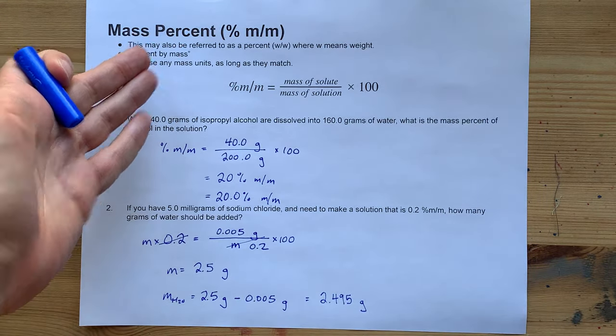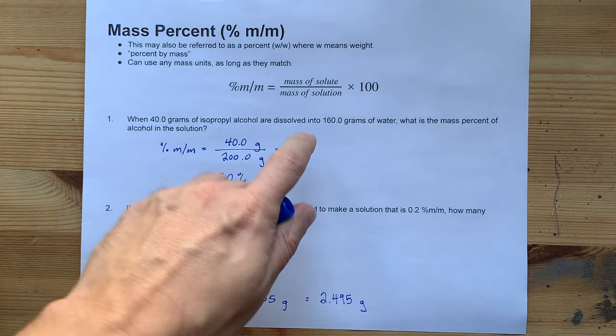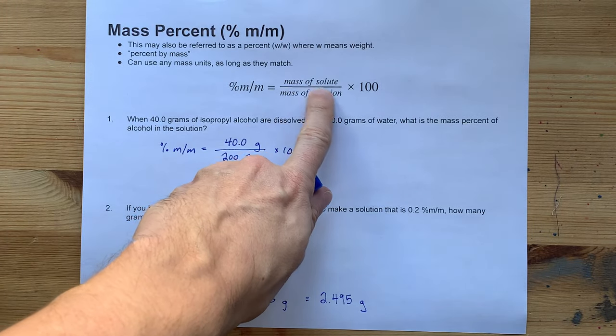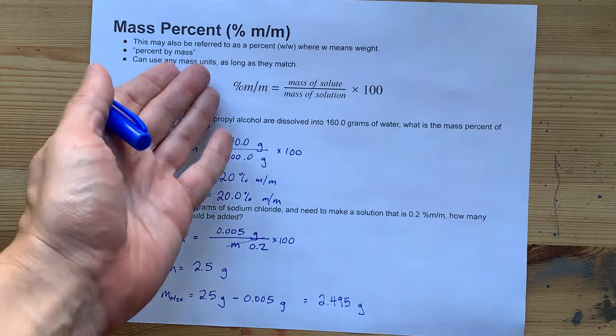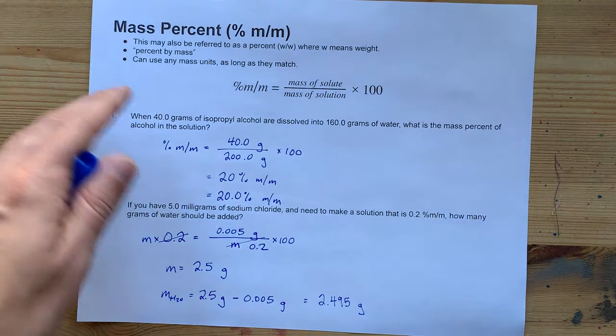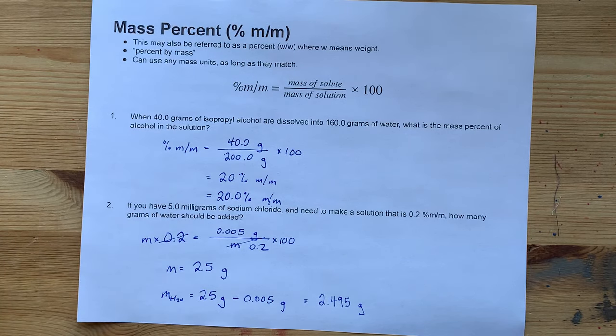Anyways, mass percent is very useful. It is the ratio of the masses of solute and solution times by 100 to get it into a percent. There it is. It's beautiful. Best of luck.